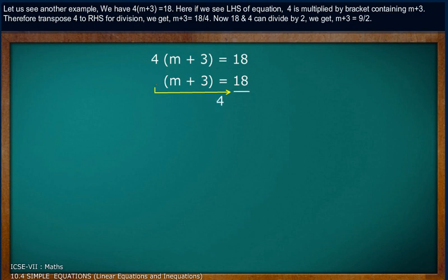Therefore, transpose 4 to the right-hand side for division. We get m plus 3 equals 18 divided by 4. Now, 18 and 4 can be divided by 2. We get m plus 3 equals 9 by 2.